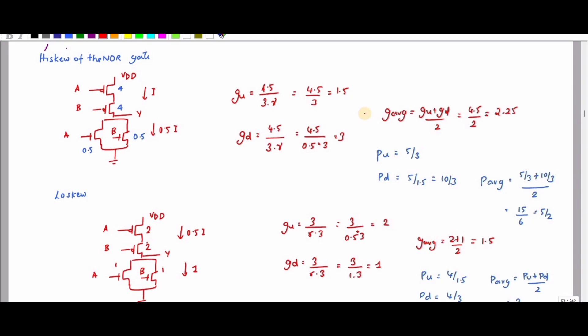To find p_u: the number of transistors connected to the output is 2 + 1 + 4 + 1 = 4 (wait — that gives 4), so p_u = 4 / 1.5. p_d = 4 / 3. p_average = (p_u + p_d) / 2 = (4/1.5 + 4/3) / 2 = 12/6 = 2. This is a very important problem — you can expect this question in your university examination. Thank you very much.